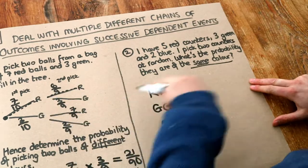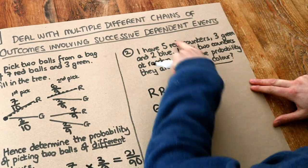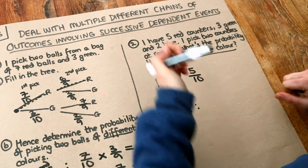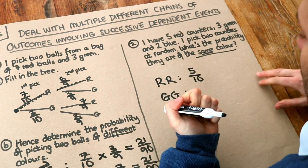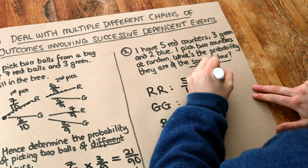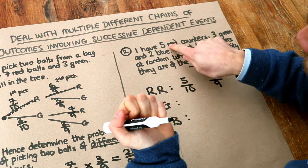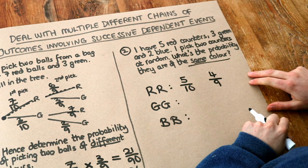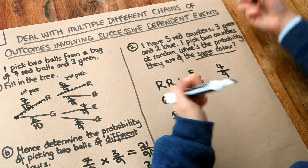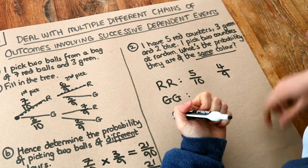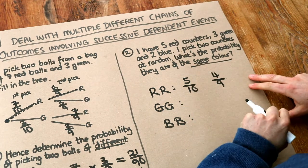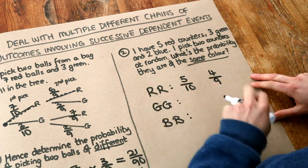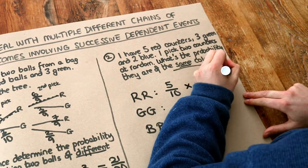What's the probability that the first ball is red? We don't need a tree. Out of 10 counters — because 5 plus 3 plus 2 is 10 — five of them are red, so it's five tenths. I've already got a red counter in hand, so there are nine counters left with only four red remaining. The probability of the second counter being red is four ninths. This is why they're called dependent events — your second pick depends on the first. Red and then red: multiply together to get 20 over 90.